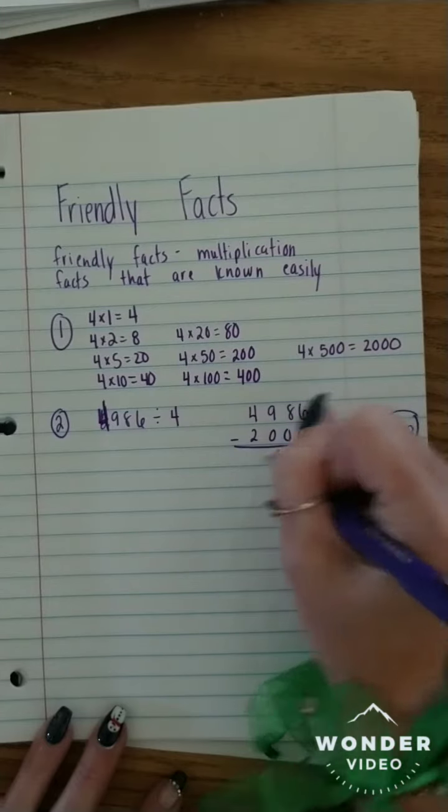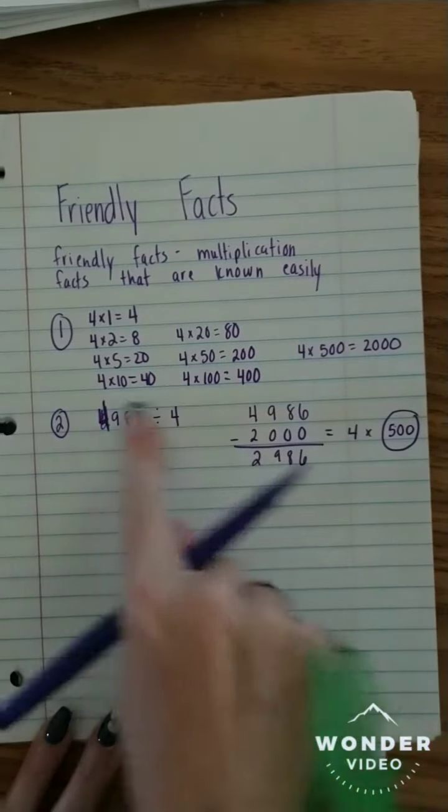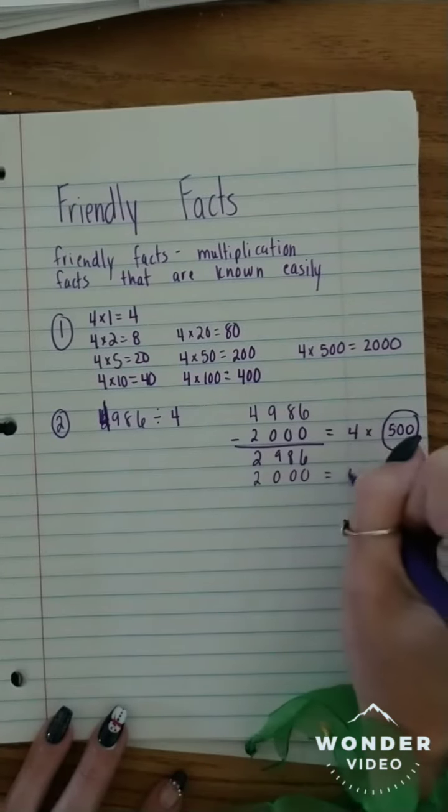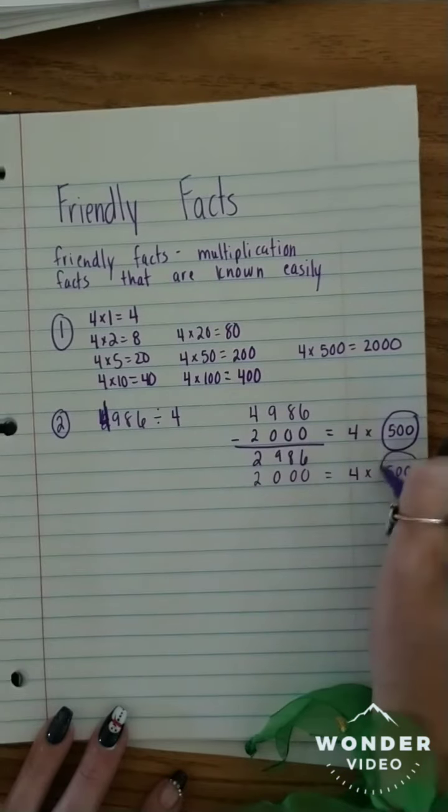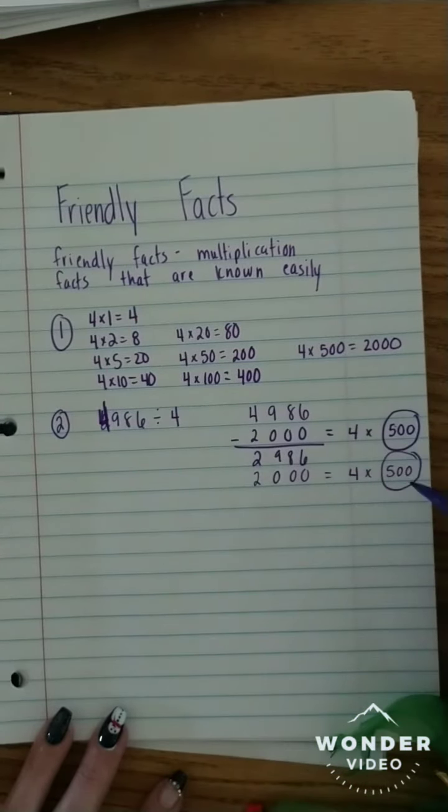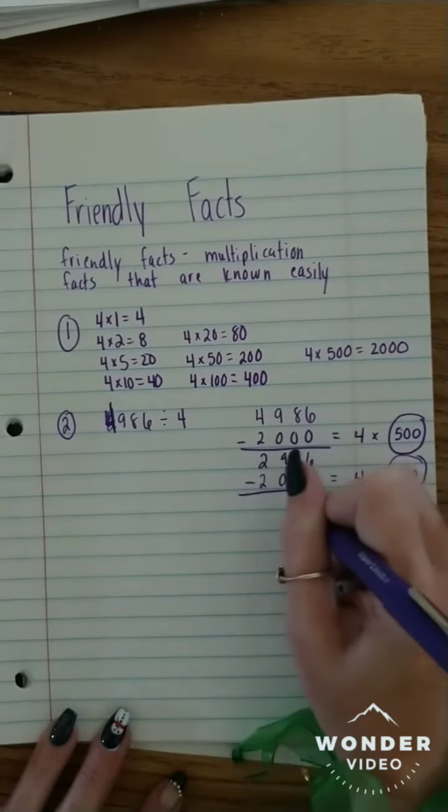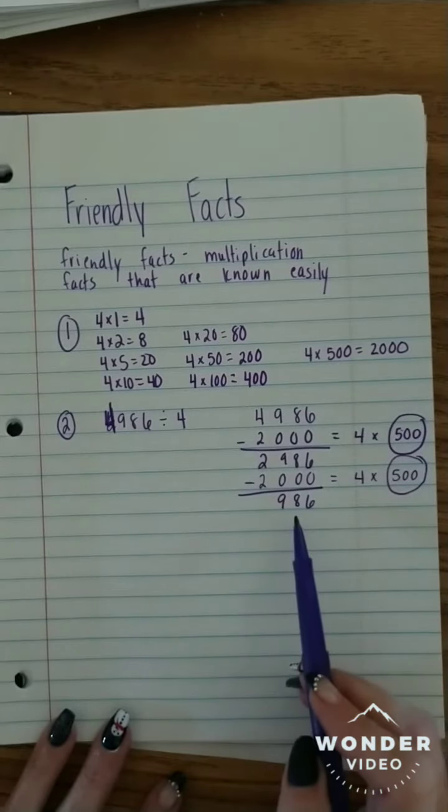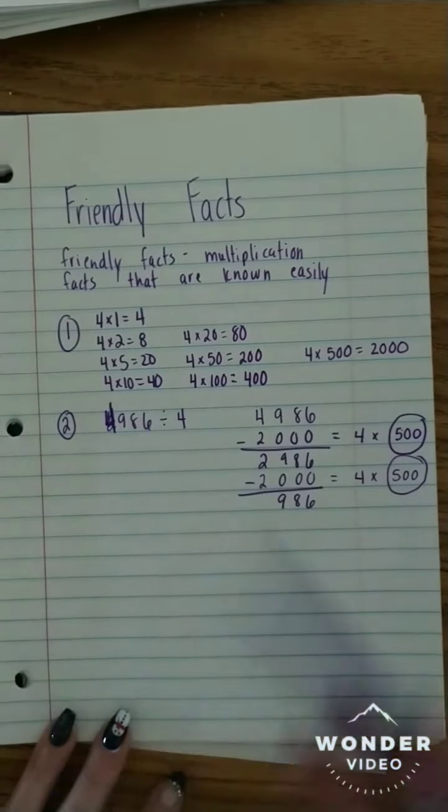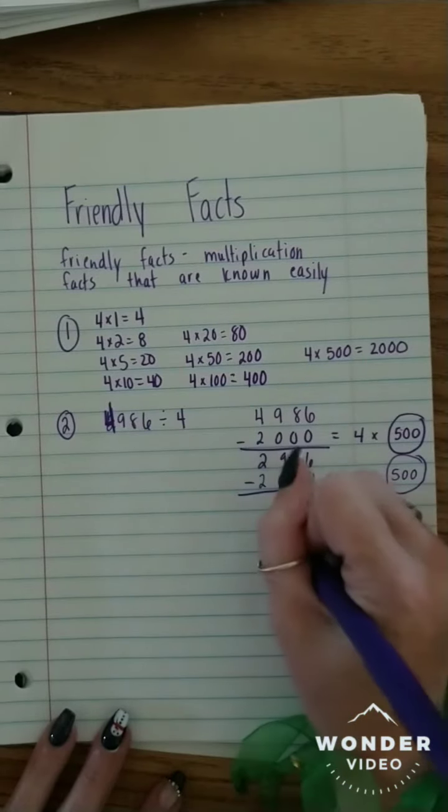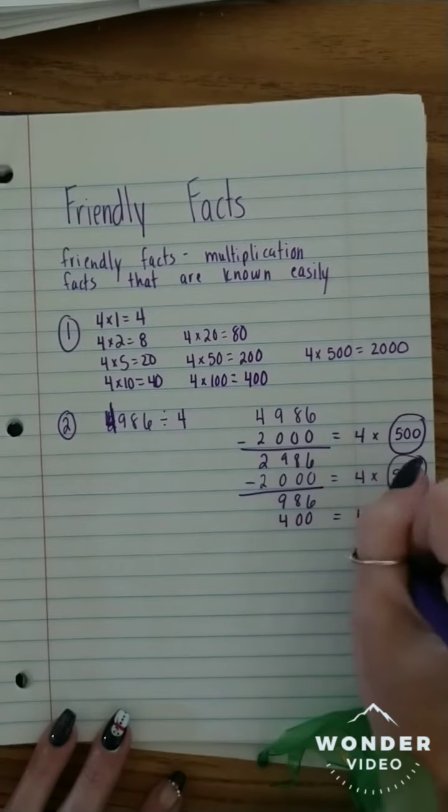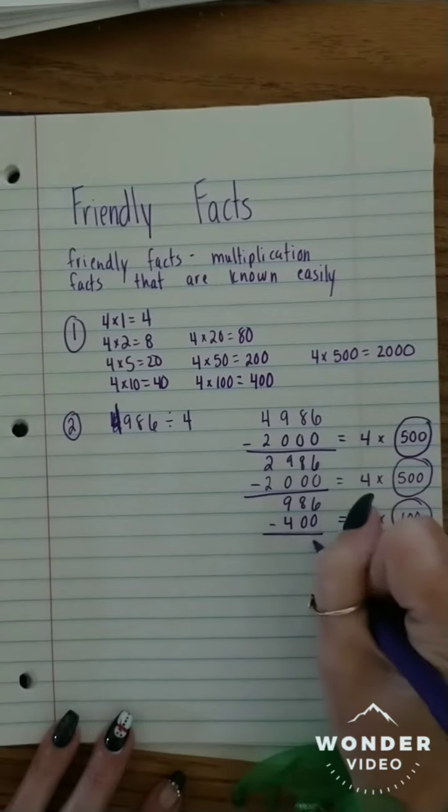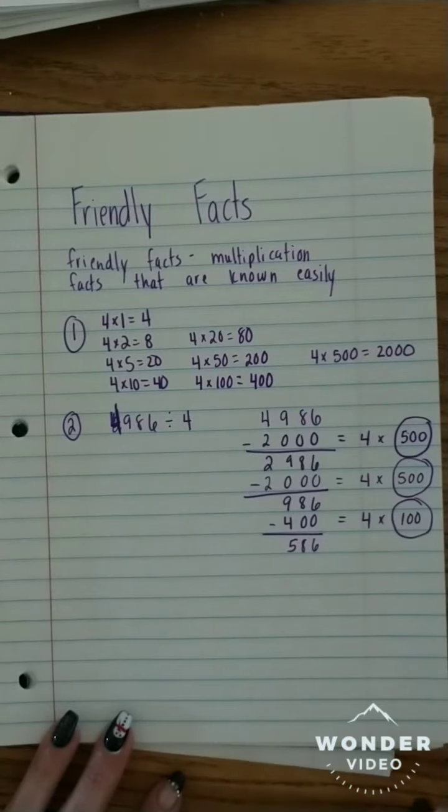That's 2,986. Looking at my multiples again, I can pull out another 2,000. And that's still 4 times 500, and I circle the 500 because that's telling me I use that four 500 times. Subtract. That gives me 986. Now I can't do another 2,000 because I only have 986 left. So let me look at my next biggest multiple that I could use. Well, I can use 400. And that's 4 times 100. I'm going to circle the 100. Subtract that out.